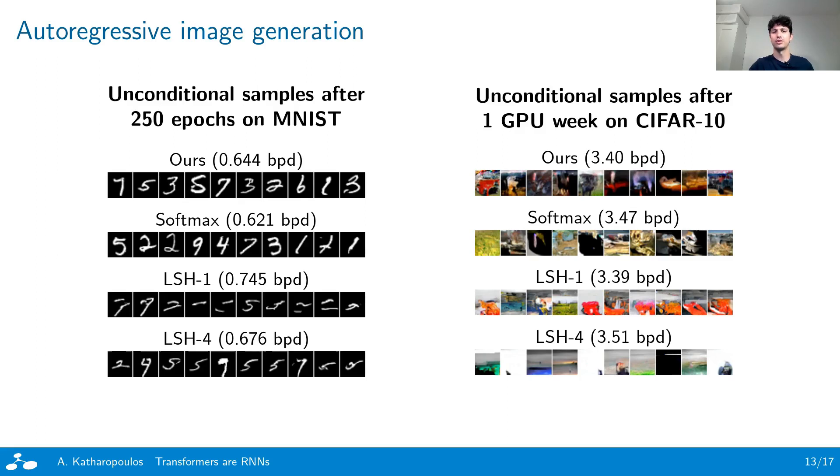On the left side, we visualize unconditional samples generated after training on MNIST. We observe that our linear transformer and softmax transformer exhibit very similar behavior and generate high-quality samples. Reformer yields images less similar to softmax transformer. This is also validated quantitatively by the achieved bits per dimension, which are significantly higher for Reformer.